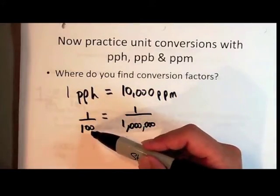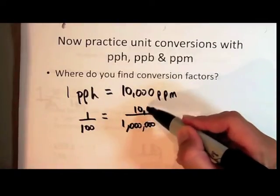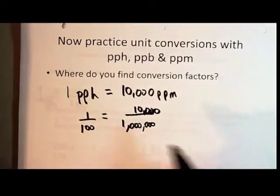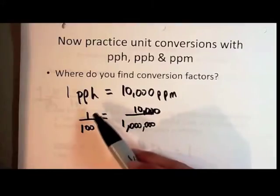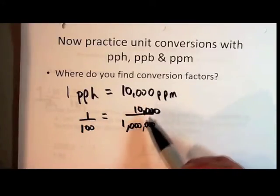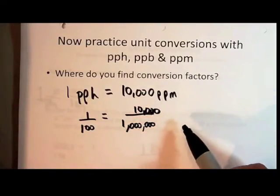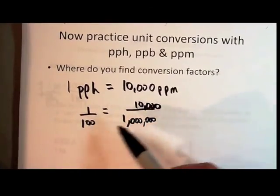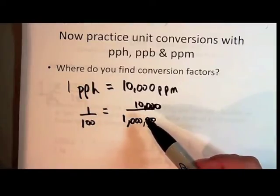In order for one part per 100 to be equal to parts per million, we have to have ten thousand parts per million. Because one over 100 is like one over ten to the two. This is ten to the five over ten to the seven, and that's the same as one over ten to the two. It's just base ten math, basically.